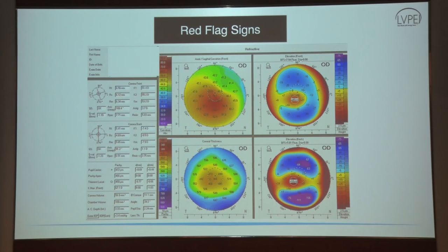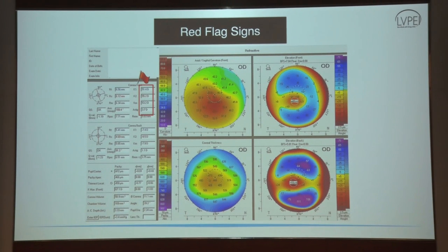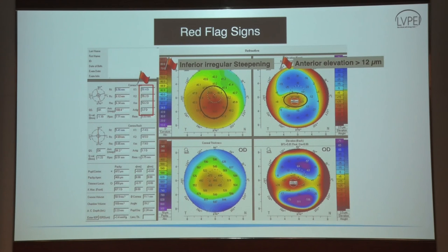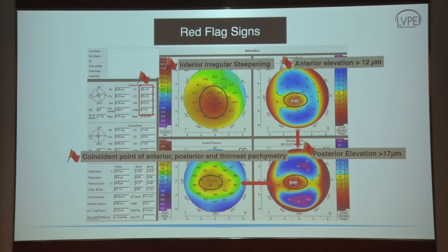These are the normal cutoffs: anterior elevation less than 12 and posterior elevation less than 16 are considered normal. Values of 12–15 anteriorly and 17–22 posteriorly are keratoconus suspects. More than 15 anteriorly and more than 22 posteriorly indicates definite keratoconus. Looking at this example: keratometry values are extremely high going into the 50s, there is inferior irregular steepening, anterior elevation is in the 20s and 30s, posterior elevation has gone up to 68, and the thinnest pachymetry point coincides with the steep area and elevation. This is a definite focal ectasia — keratoconus.